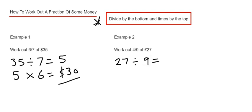27 divided by 9 is 3. We put that answer on the next line down and multiply it by the top number of the fraction, which is 4. So 3 times 4 is 12, which gives us £12.